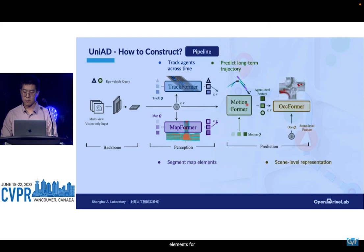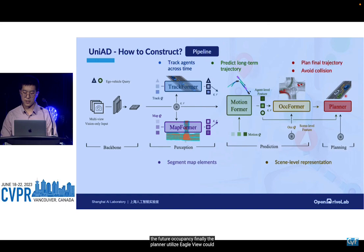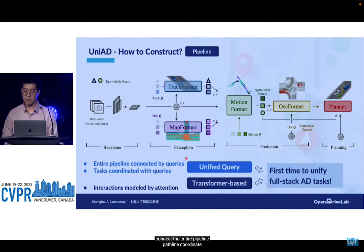As for prediction, the MotionFormer receives output features from perception modules, predicting the long-term trajectories of each agent. Its outputs are then fed into OccuFormer to predict future occupancy. Finally, the planner utilizes the ego vehicle query from MotionFormer to plan, while avoiding predicted occupancy for safety. We use a unified query design to connect the entire pipeline and coordinate all tasks towards planning.